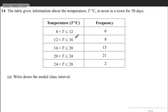This is question number 14. The table gives information about the temperature T degrees C at noon in a town for 50 days.